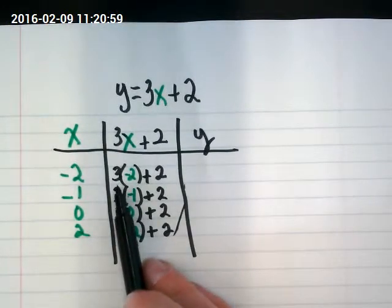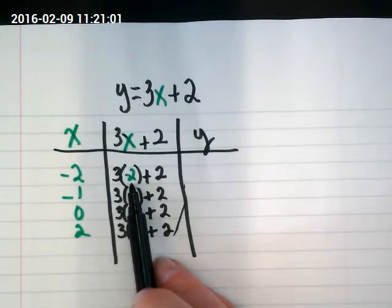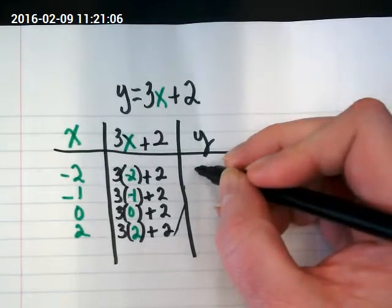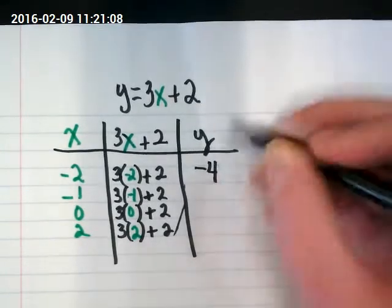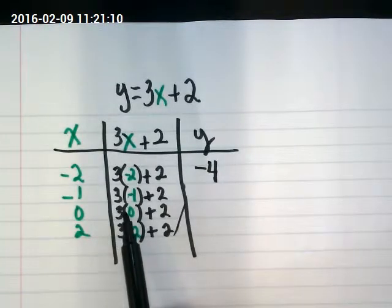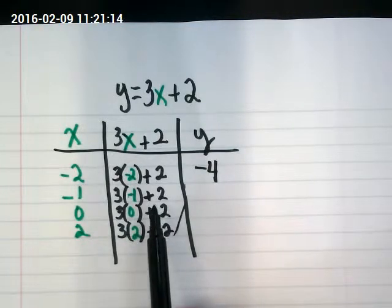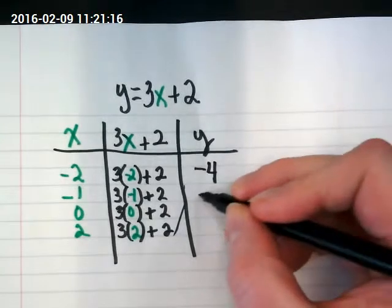If I do 3 times negative 2, I get negative 6. Negative 6 plus 2 would be negative 4. 3 times negative 1 would be negative 3. Negative 3 plus 2 would be negative 1.